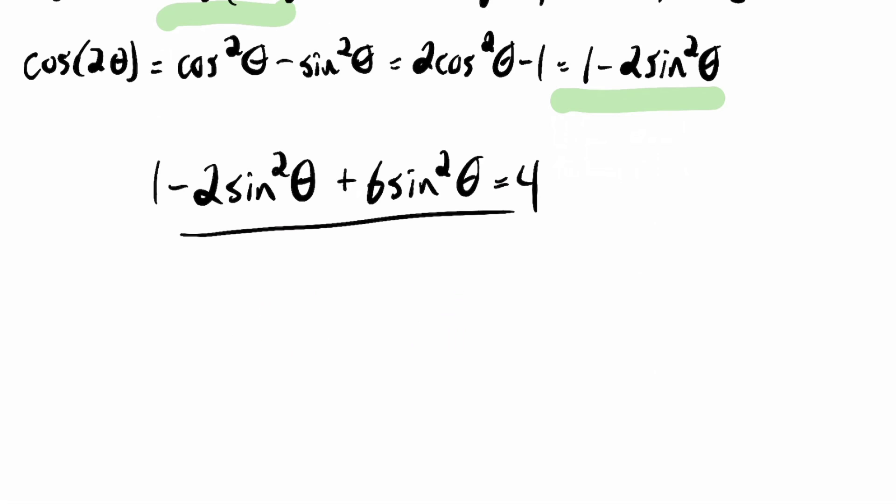And now, basically, I'm just solving a linear equation at this point. If you think of the sine squared theta as being a variable, I've got 1 plus 4a equals 4. I'm just going to subtract 1, divide by 4 on both sides.